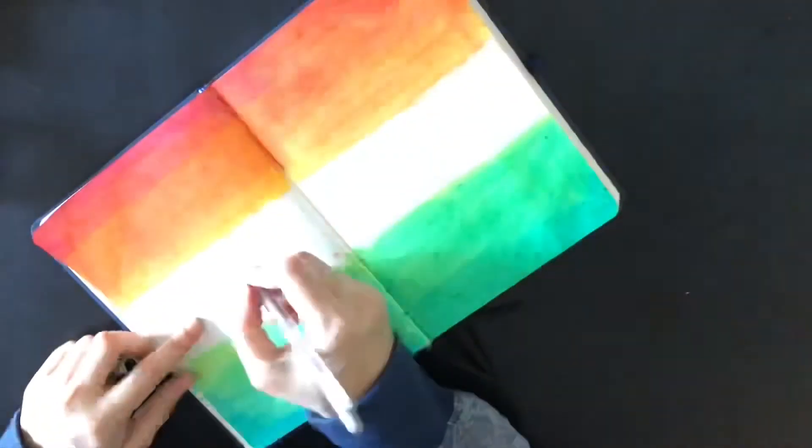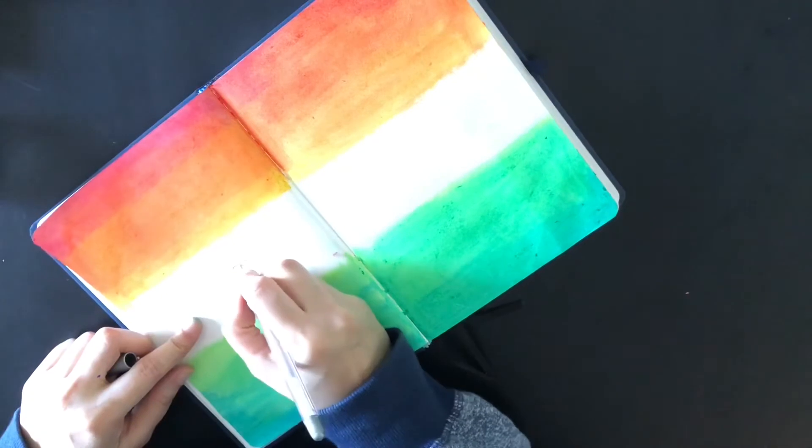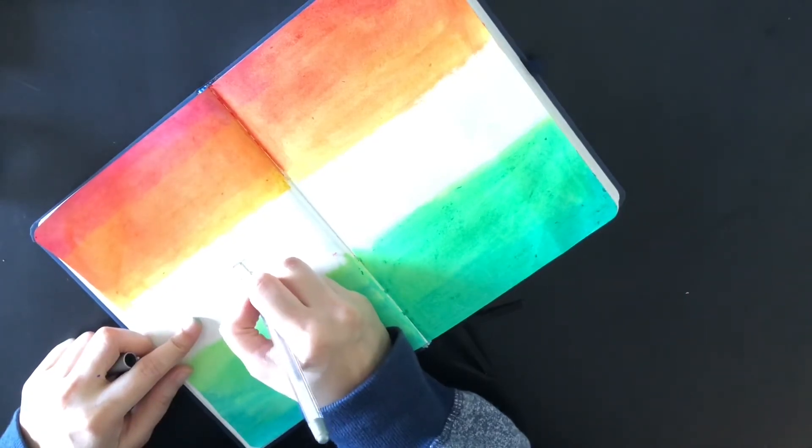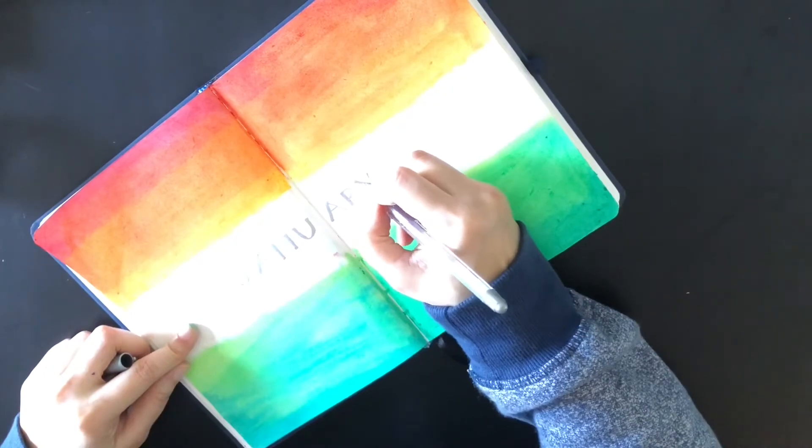I'm writing January in block letters. I wanted to write it in blue glitter pen to match the Ashoka Chakra, but all I had was silver and gold, so I went ahead with silver.